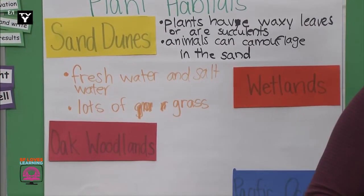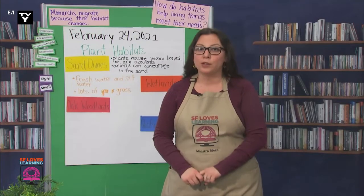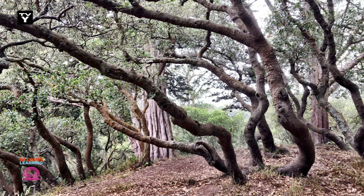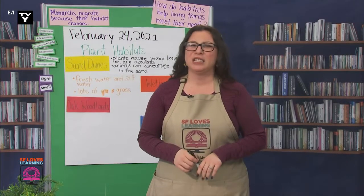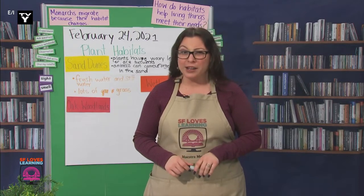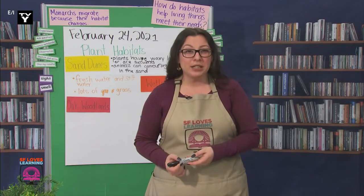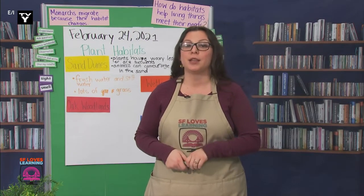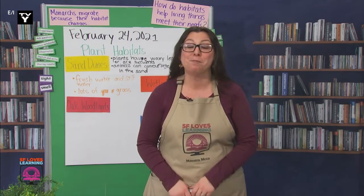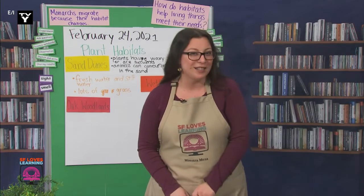Let's observe the photo that we have of Oak Woodlands in the Golden Gate Park. What do you notice? There are a lot of trees, and those are Oak trees, and it does look a bit dry. Apparently, these Oak trees are called Coast Live Oaks, and they actually provide food for many birds and squirrels.